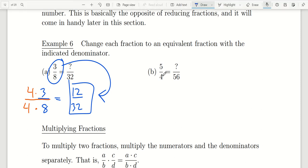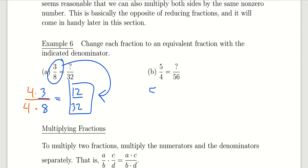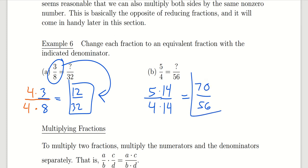For the next one, we want to go from 5 over 4 to an equivalent fraction expressed as something over 56. We ask: what do we multiply 4 by to get 56? That's the same as asking how many times 4 goes into 56, which is 14 times. Because I'm multiplying the denominator by 14, I must also multiply the numerator by 14. Five times 14 gives us 70. So 5 fourths is equivalent to 70 over 56.